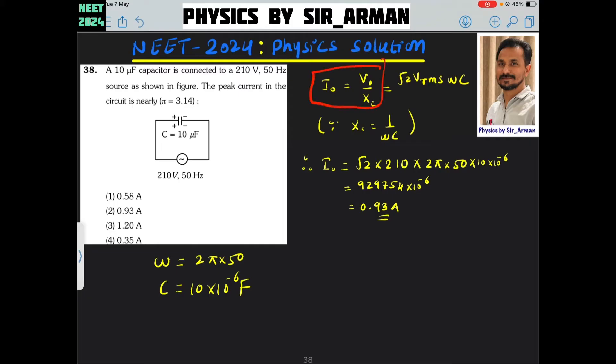For peak current, we can use this equation directly: I0 equals V0 by XC, where XC is the reactance of the capacitor.